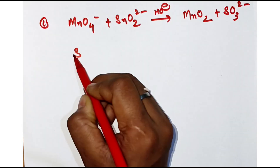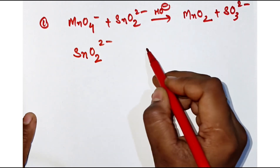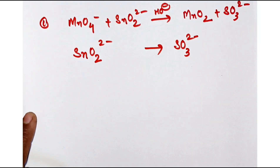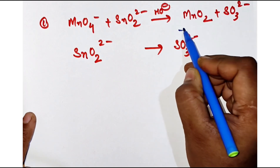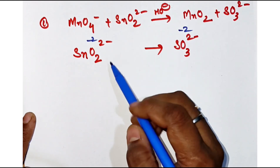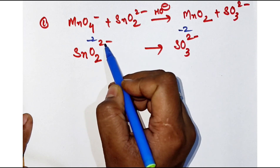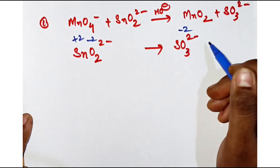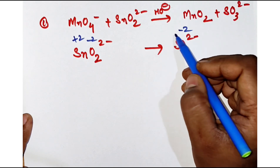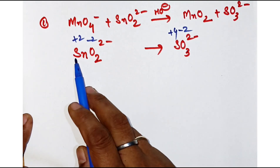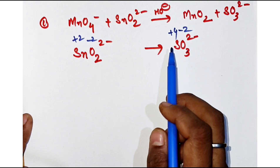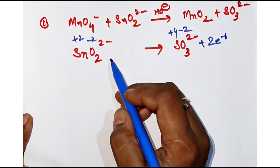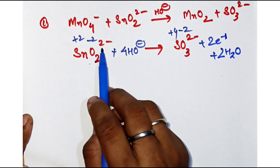Let's go to the first equation: SnO₂²⁻ giving SO₃²⁻. Finding oxidation numbers — oxygen is minus two, so two twos are four, minus two means it is plus two here. And here two twos are four, six minus two is plus four. So from plus two it is going to plus four, meaning it is losing two electrons — oxidation is taking place.